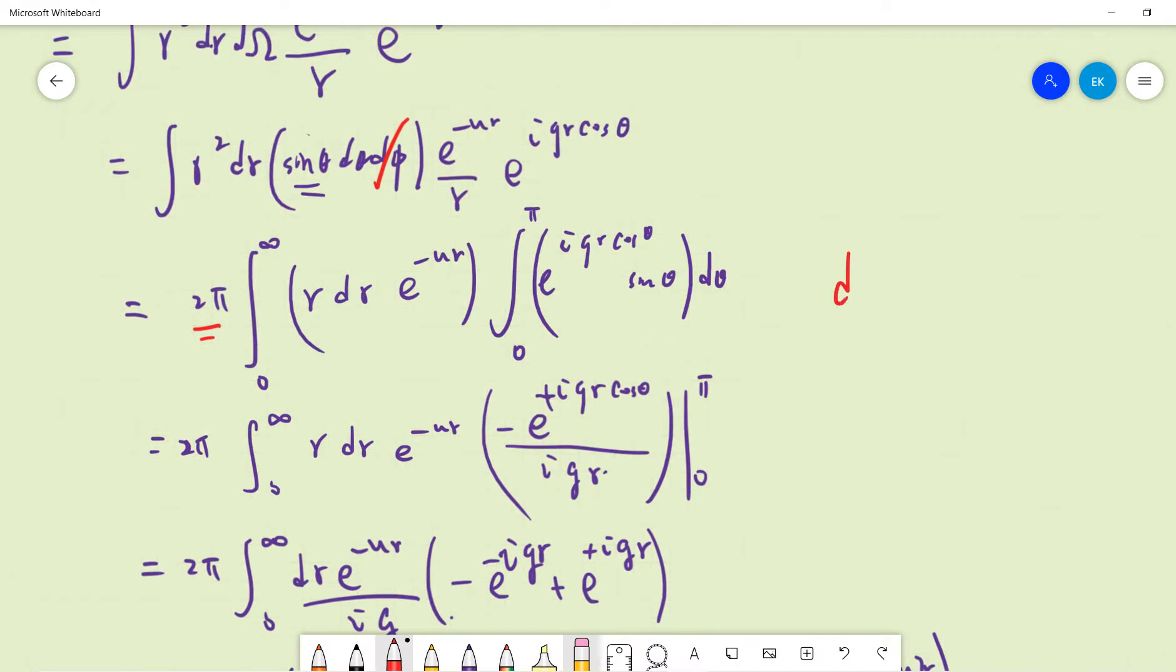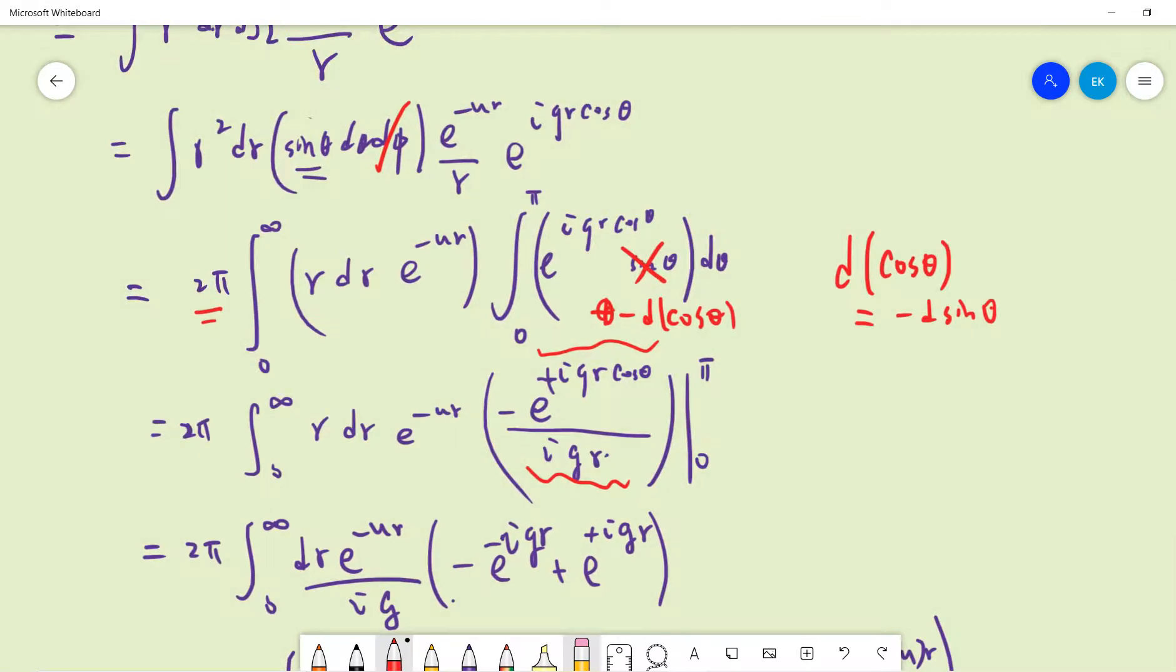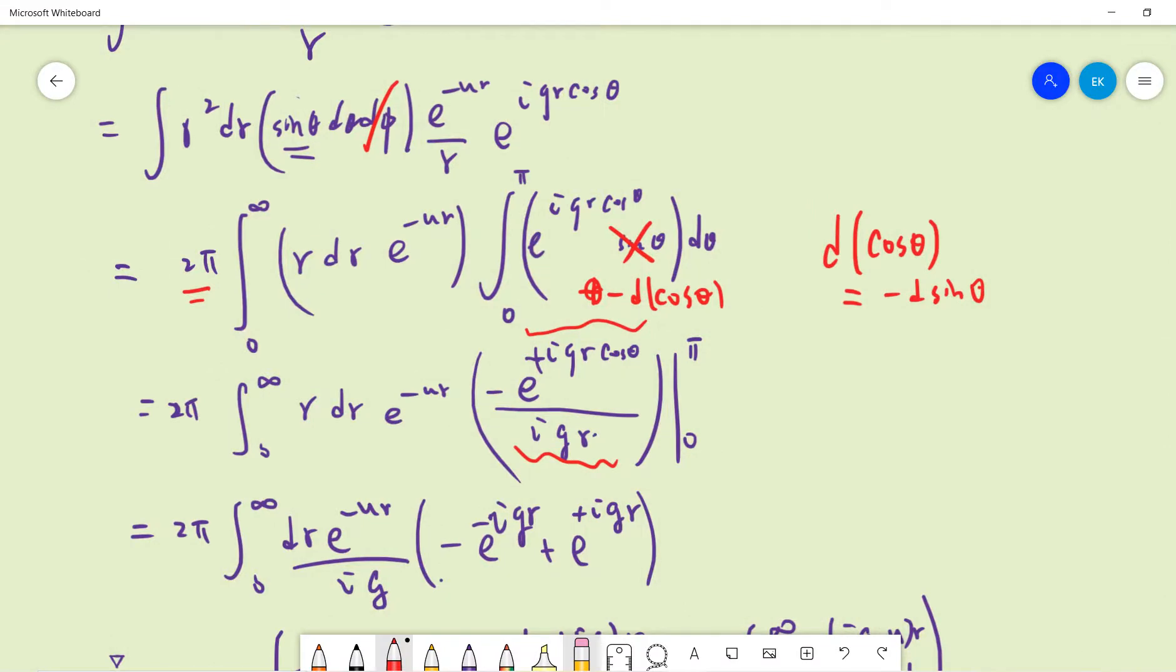Notice that from simple mathematics, d cosine theta equals minus d sine theta, so we can change this to negative d cosine theta. This term is the same as this term, easy to prove. Now, the amazing thing is there's an r here and r here, so you can cancel this r.